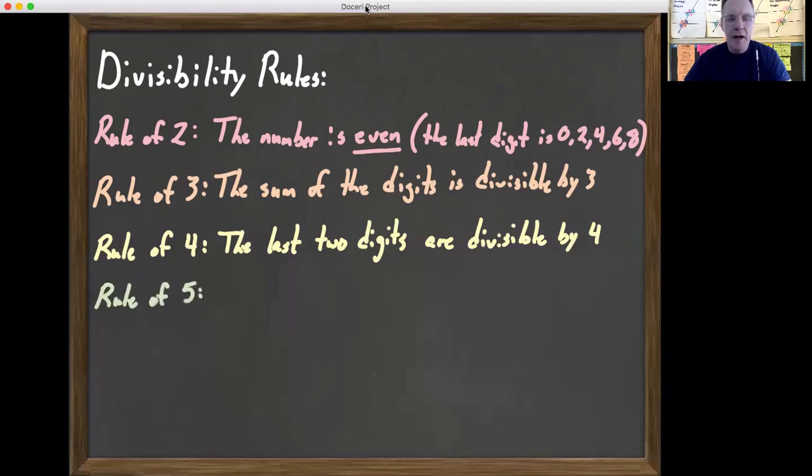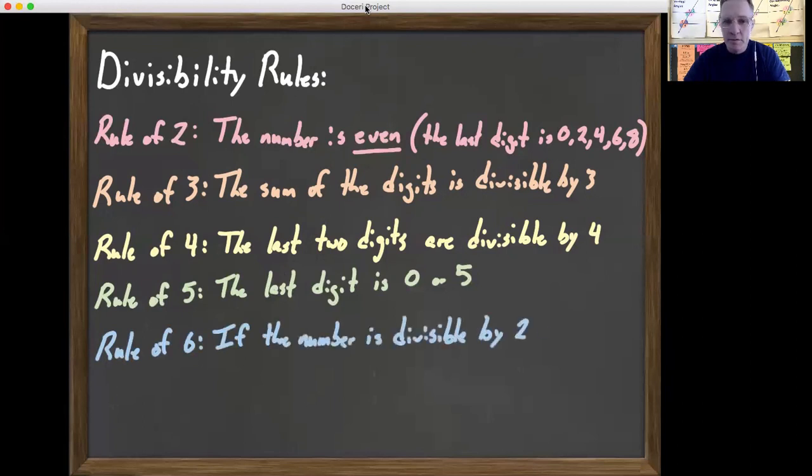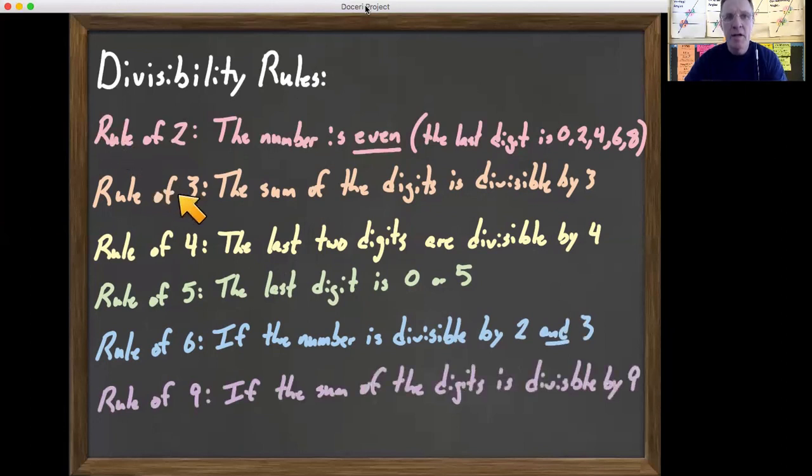Rule of five. If the last digit is 5 or 0, then it's divisible by 5. Rule of six. If the number is divisible by 2 and 3. So meaning if it passes the rule of 2—if it's even—and if the sum of the digits is divisible by 3.